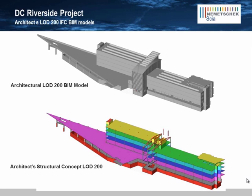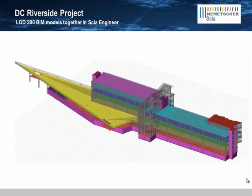Allowing the structural engineer to reference and reuse the architect's models is a huge improvement over today's traditional workflows. Here you can see the two BIM models together in SIA Engineer. Having the architectural model as background geometry helps the engineer better understand the architect's intent and reduces the number of RFIs.